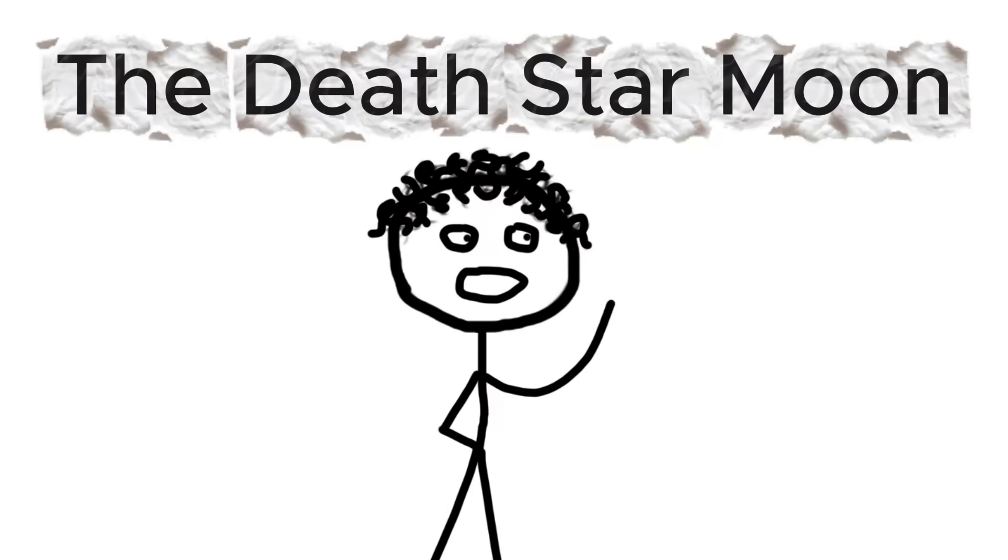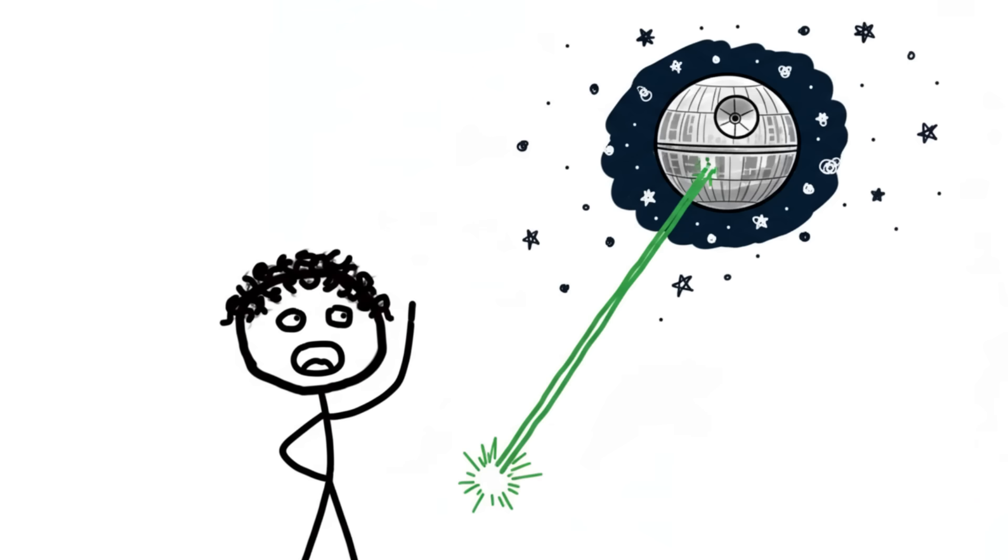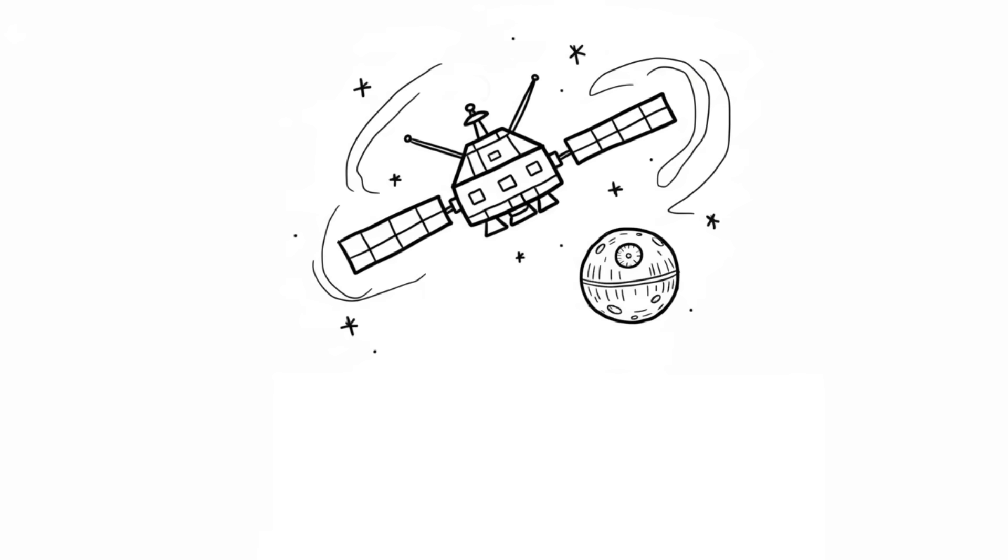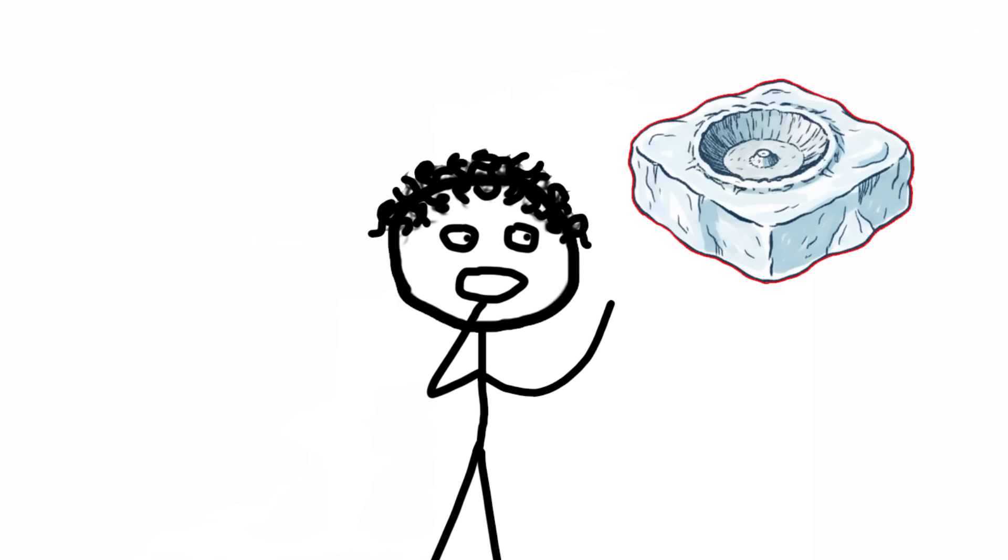Let's get right into it. Number seven, the Death Star Moon. Imagine looking up at the night sky and seeing the actual Death Star from Star Wars staring back at you. That's essentially what happened when NASA's Voyager 1 spacecraft snapped a photo of Mimas, one of Saturn's 62 plus moons. Mimas is a small, unremarkable ball of ice.